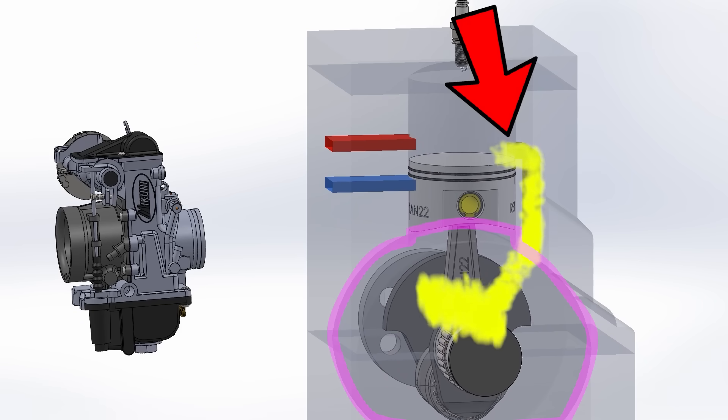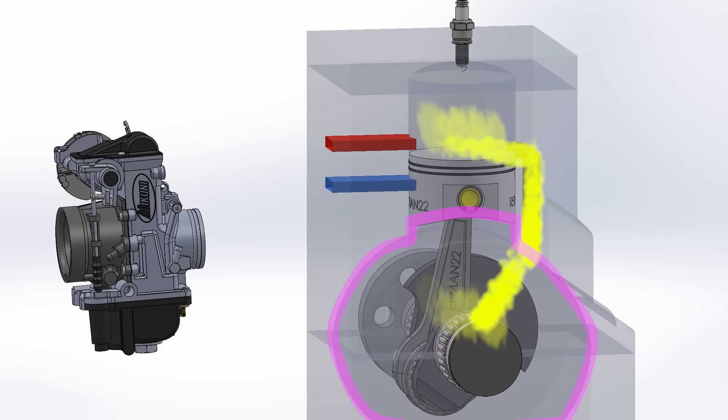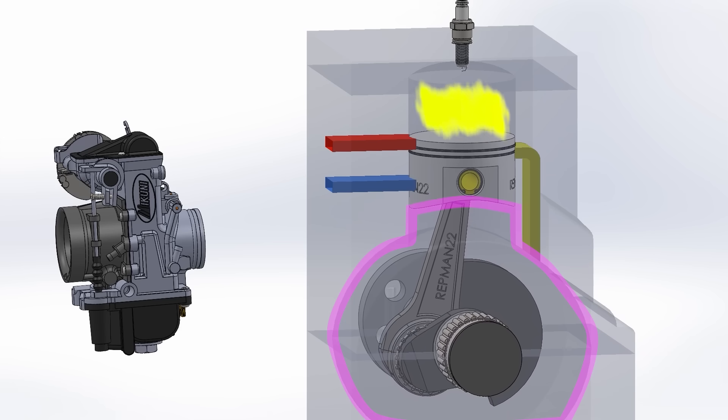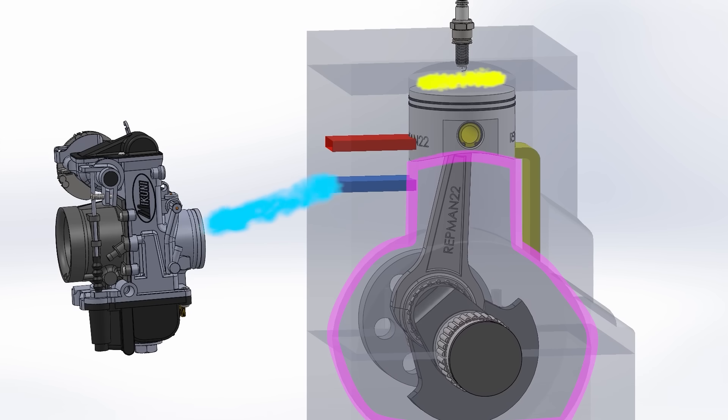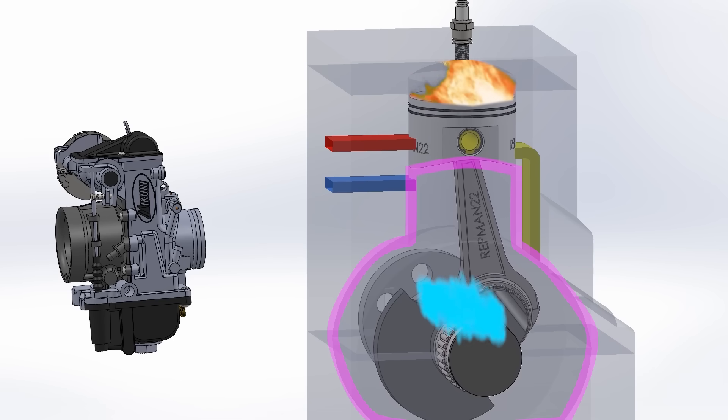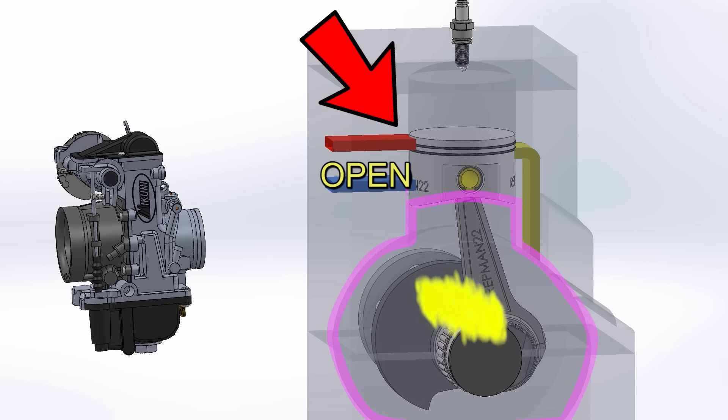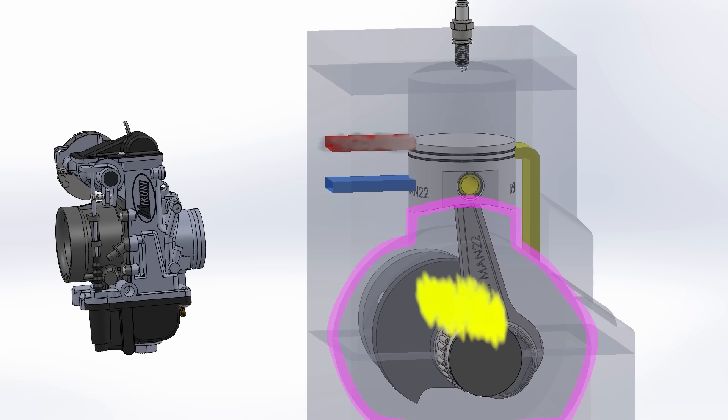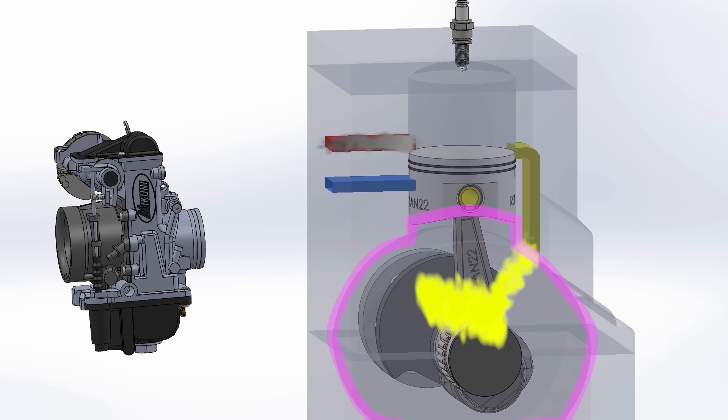Finally, when the piston goes up, the port closes. Compression begins. The spark is fired and combustion occurs, which pushes the piston down, delivering power. Finally, the exhaust port is uncovered at the same time that pressurized gases enter from the crankcase to refresh the mixture.